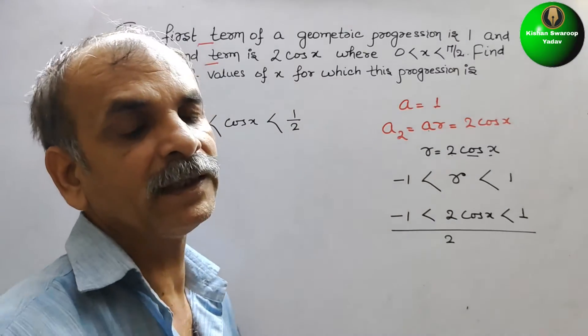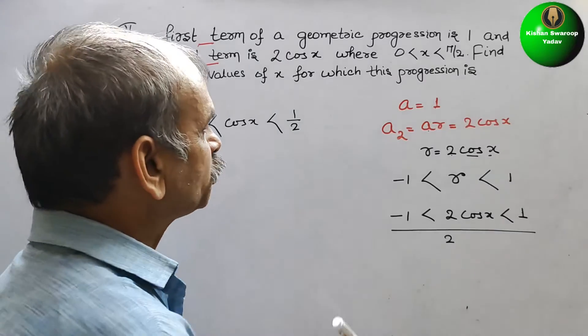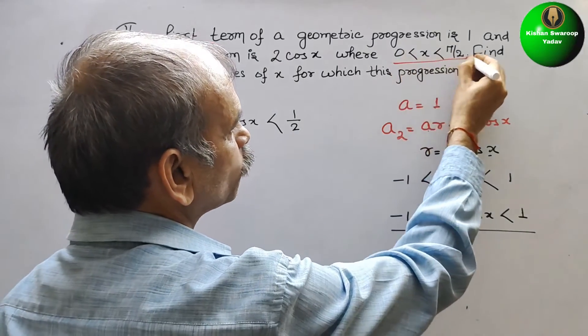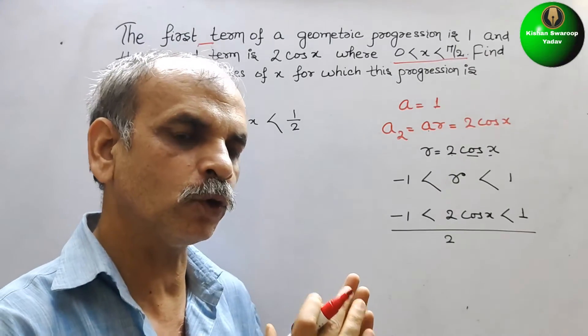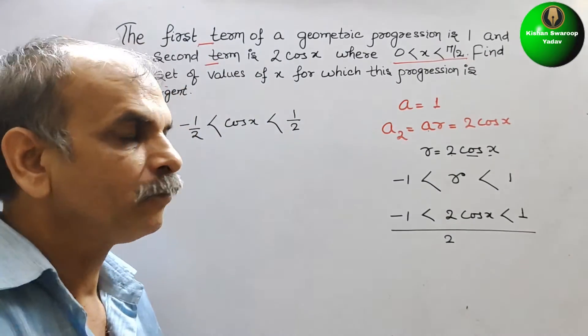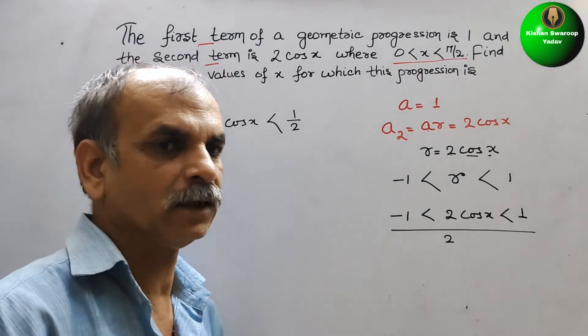Here they have given the range of x. It should be 0 to π/2 only. That means up to 0 to 90 degrees only.